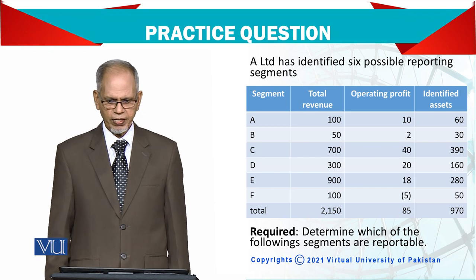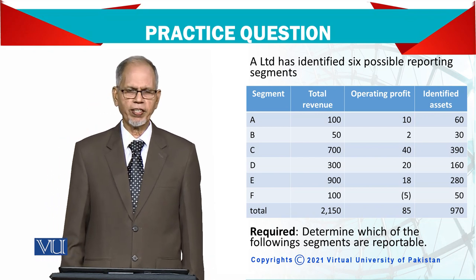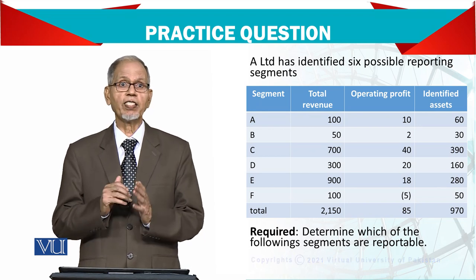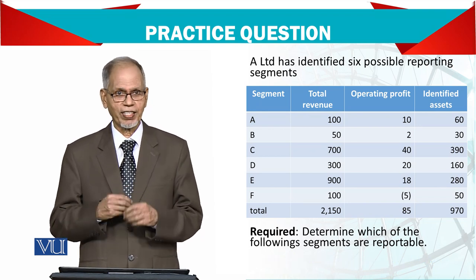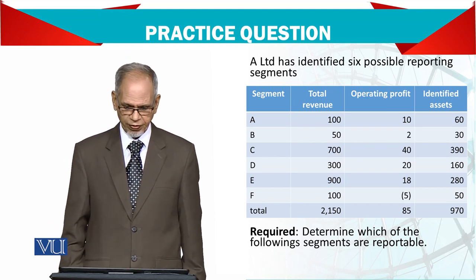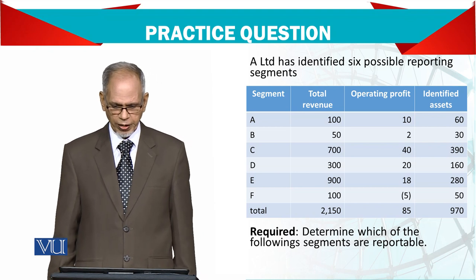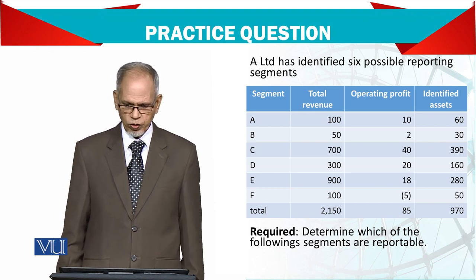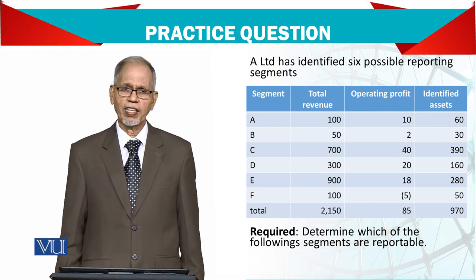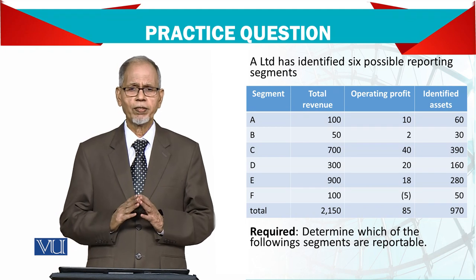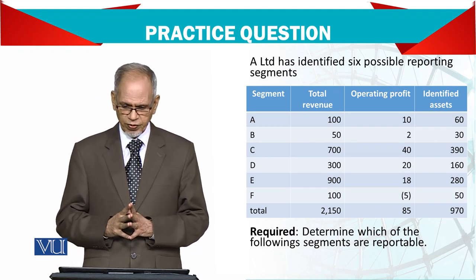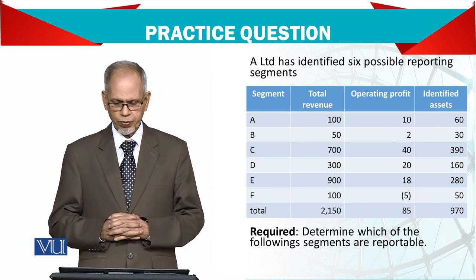A Limited has identified six possible reporting segments — A, B, C, D, E, and F — which have not been decided yet. We have to select which can be a separate segment. Total sales are given, individual sales are given, operating profits are given, and assets are given. These are the three criteria: revenue, profit, and assets. We are required to determine which of the following segments are reportable.